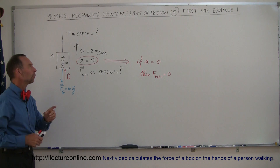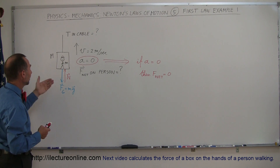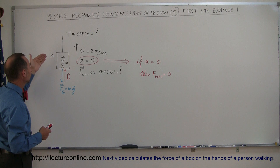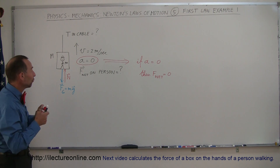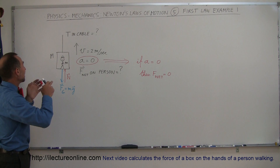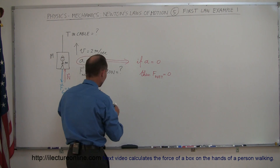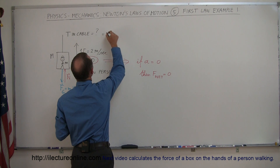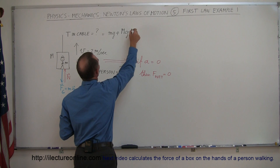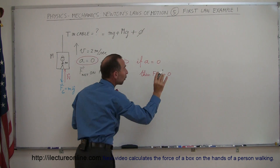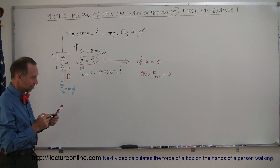So then you ask, what would be the tension in the cable? Well, what is the cable doing? It's supporting the weight of the person and the weight of the elevator car, but it's not adding additional force to accelerate anything, because nothing is accelerating. Therefore, the tension in the cable is simply equal to the weight of the person plus the weight of the elevator car, and nothing more, because no additional force is required since there is no acceleration.